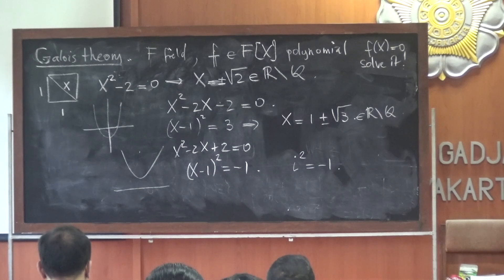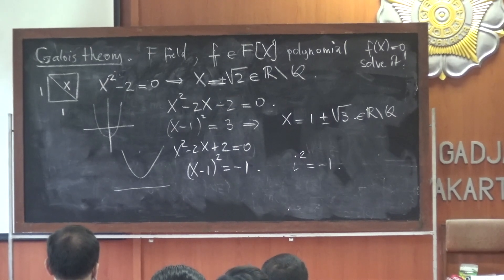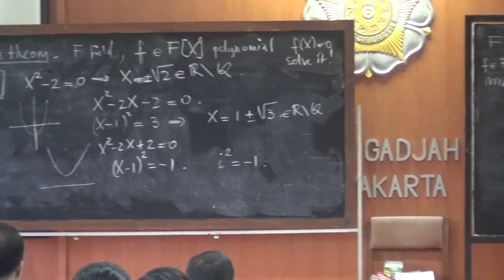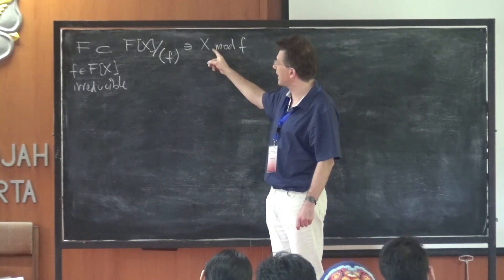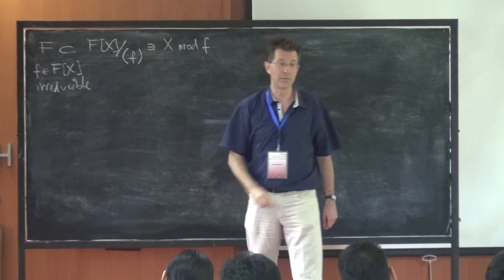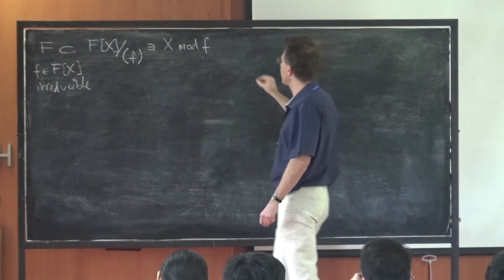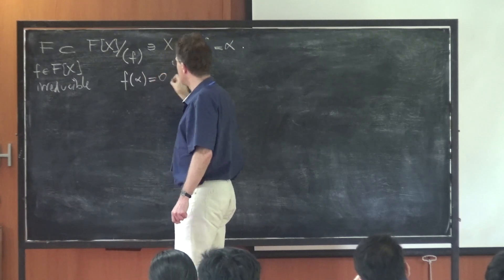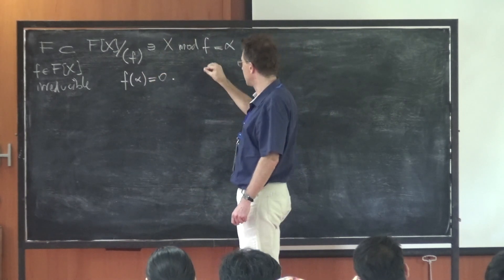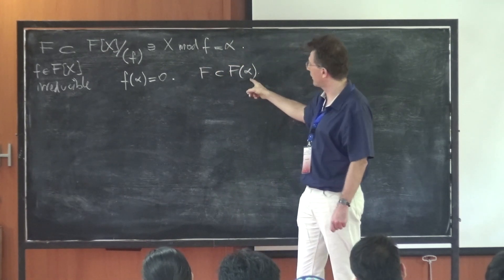So this is a field. And in this field there is an element: if you take the variable x and take it mod f, then by definition, in this field, this element — if you evaluate it in f — you get f of x, and that's exactly zero by definition. So this is an algebraic trick to achieve the fact that you call this alpha. Then by definition, f of alpha is zero. And you see that there is a field, namely f adjoined alpha, and in here alpha is a root of f.